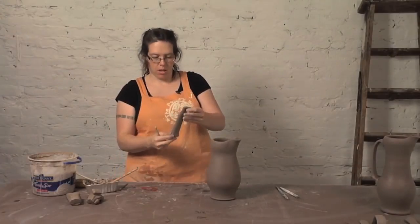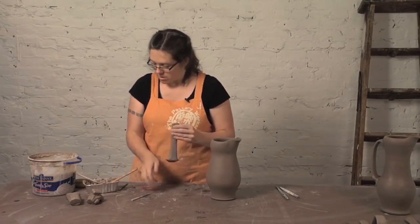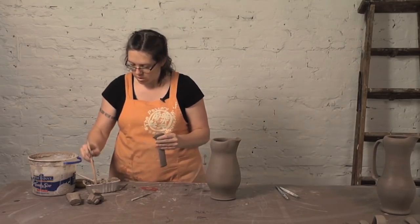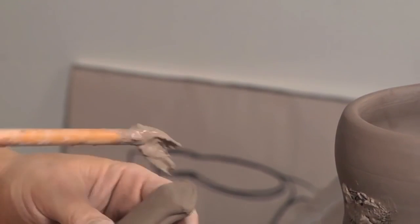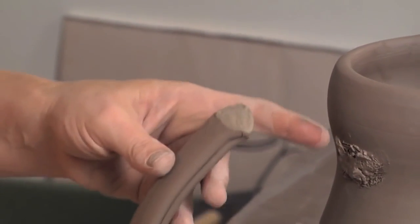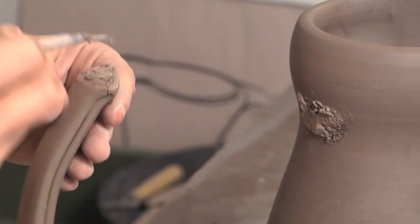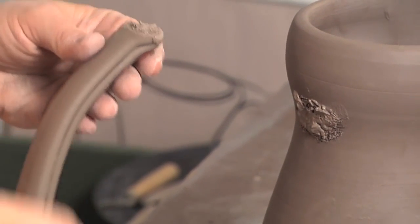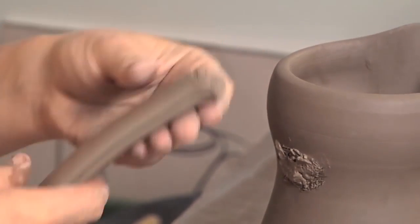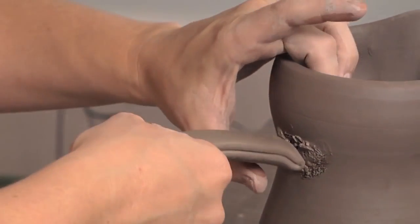All right, now I'm going to add some slip and score. So I mapped out here where I wanted to place the handle, on the top and the bottom, before I cut the handle off the trunk. Okay, so now I've got slip. I've scored this.